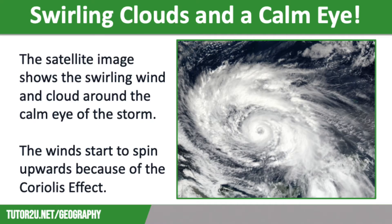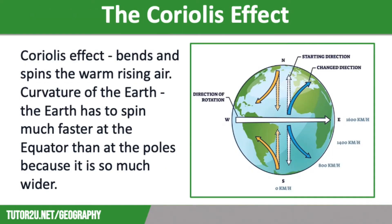Let's have a look at the Coriolis effect in more detail. The reason that tropical storms spin is due to the Coriolis effect, which bends and spins warm rising air. You can see the spinning really clearly on satellite images. In the Northern Hemisphere, hurricanes bend to the right, which makes the clouds swirl anti-clockwise, whereas in the Southern Hemisphere, cyclones bend to the left and swirl clockwise.